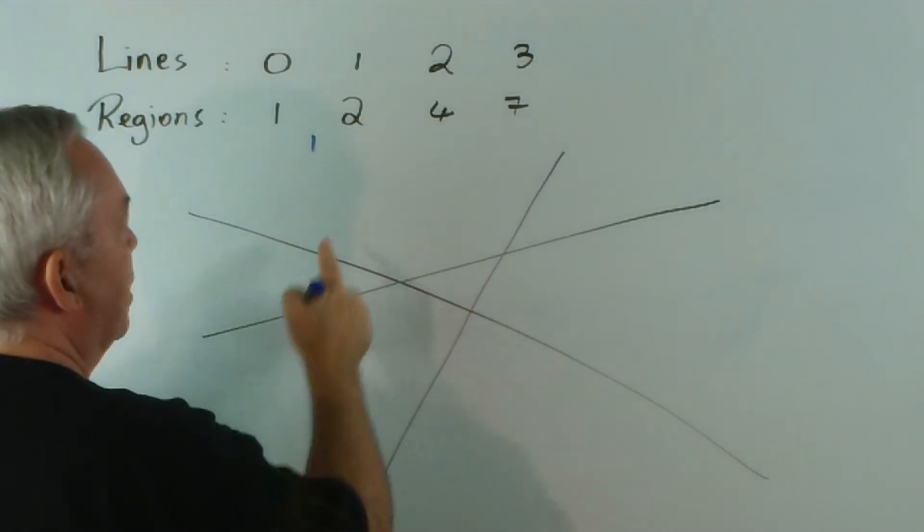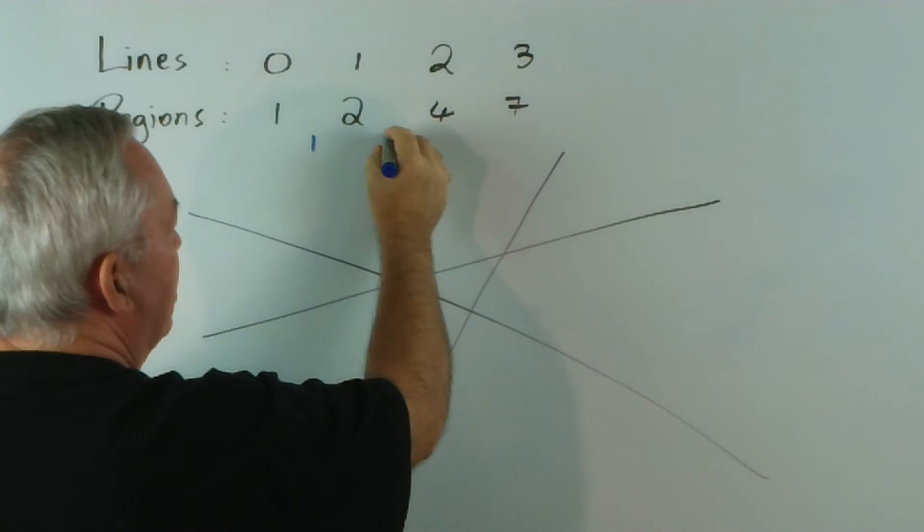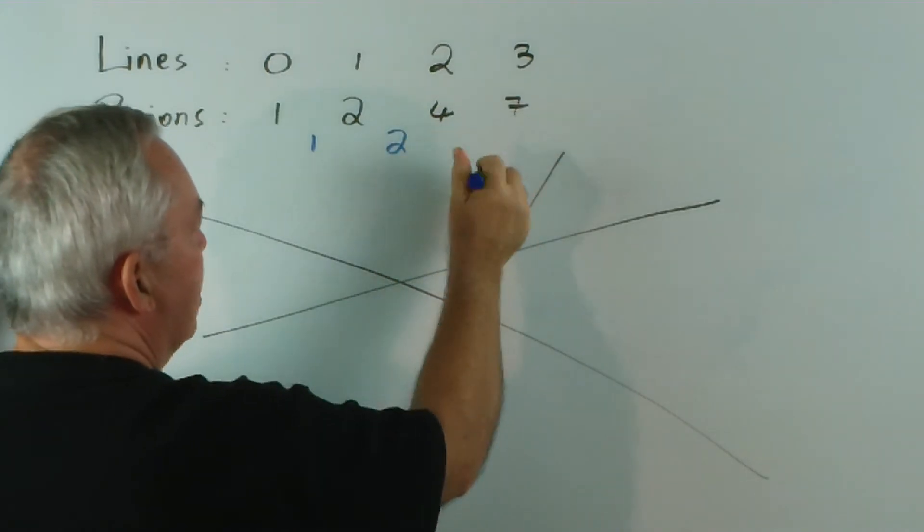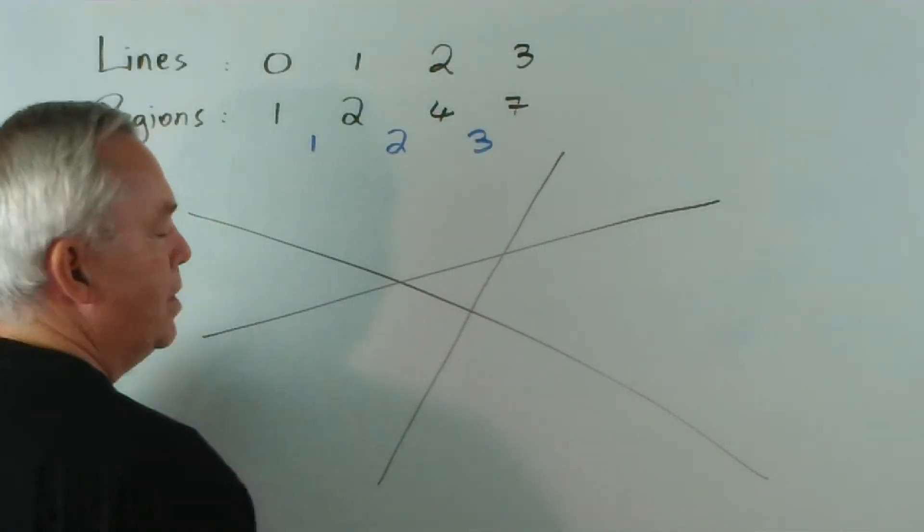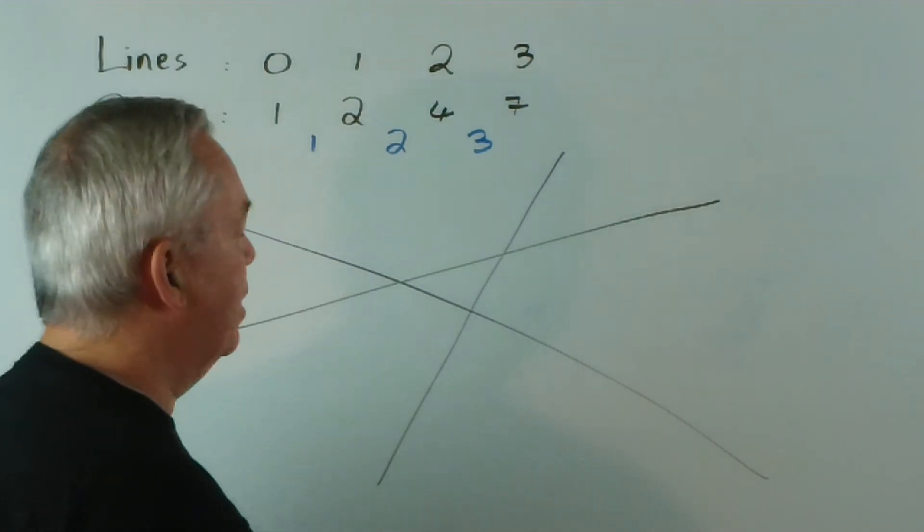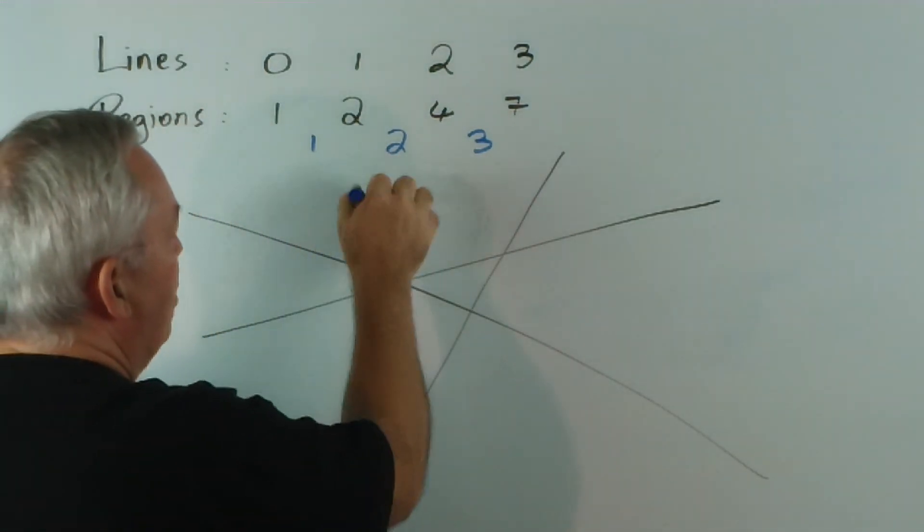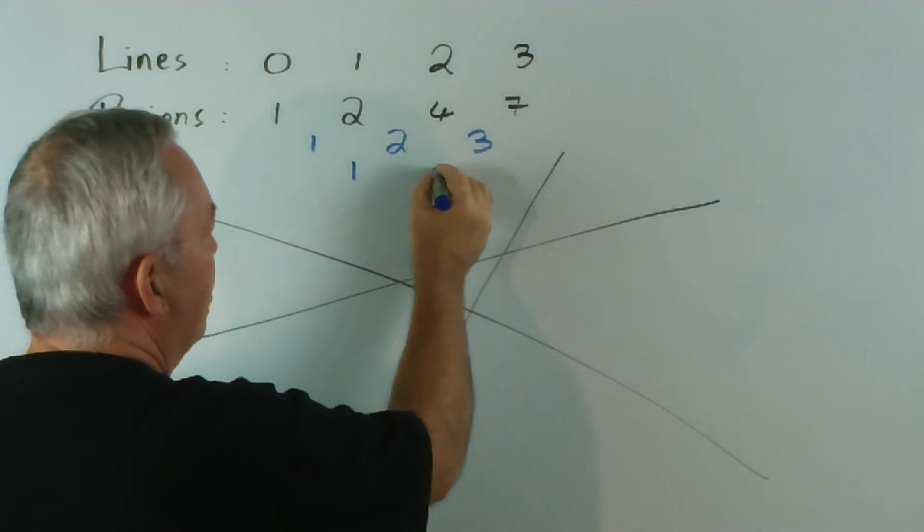By the time you've got ten lines on a sheet, you'll have a great clutter of lines in towards the centre, and very, very tiny regions and triangles. But let's look at the pattern using the differencing technique. What's the gap here? One. Two to four? Two. Four to seven? Three. This is not difficult. This is how the Babylonians would have known. What's the gap between one and two? One. Two and three? One.